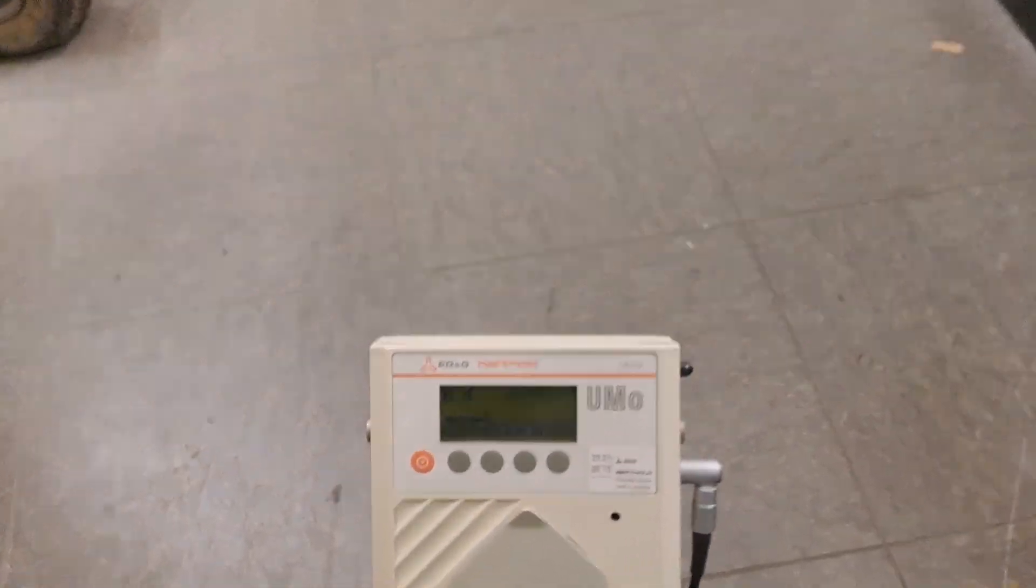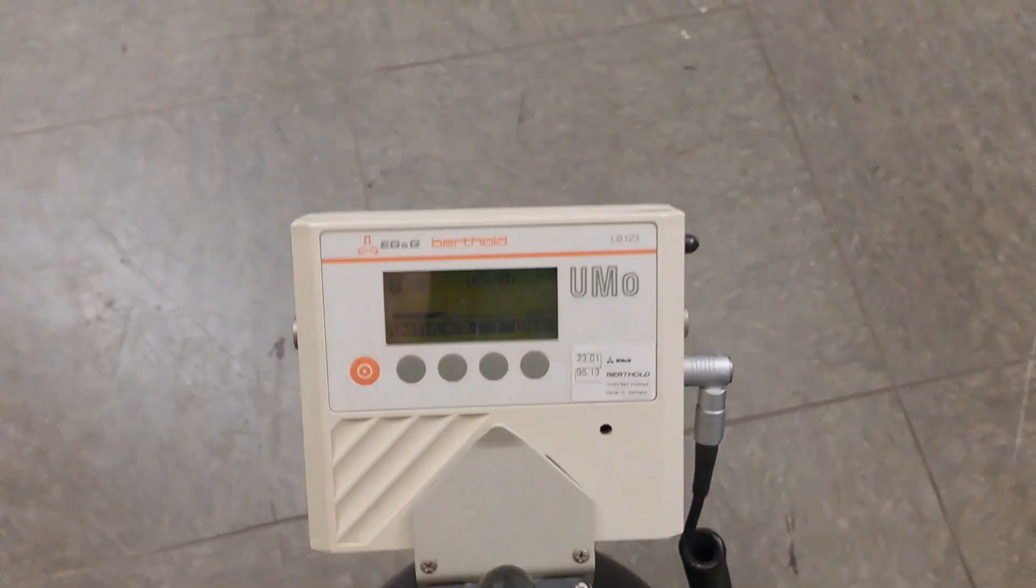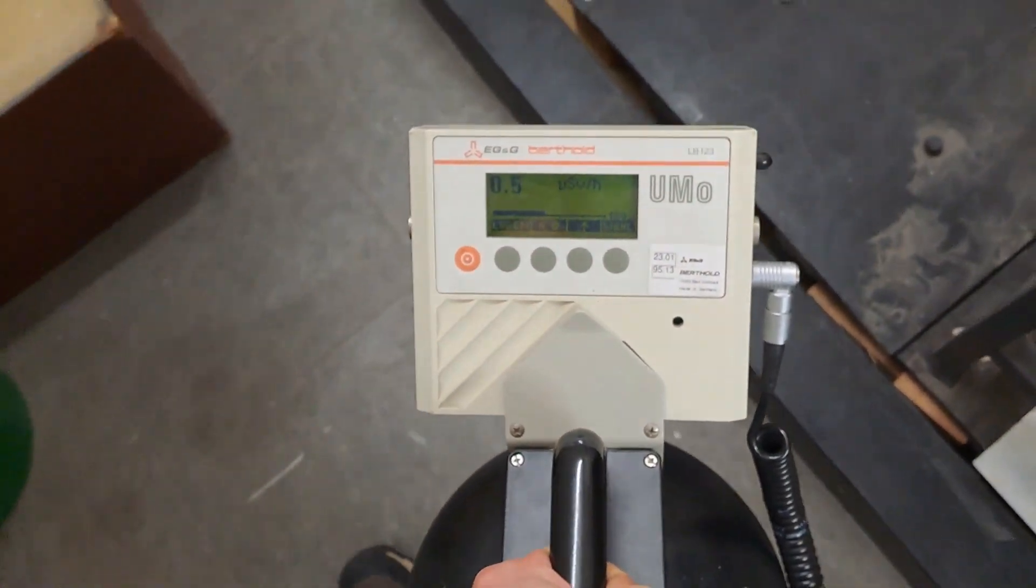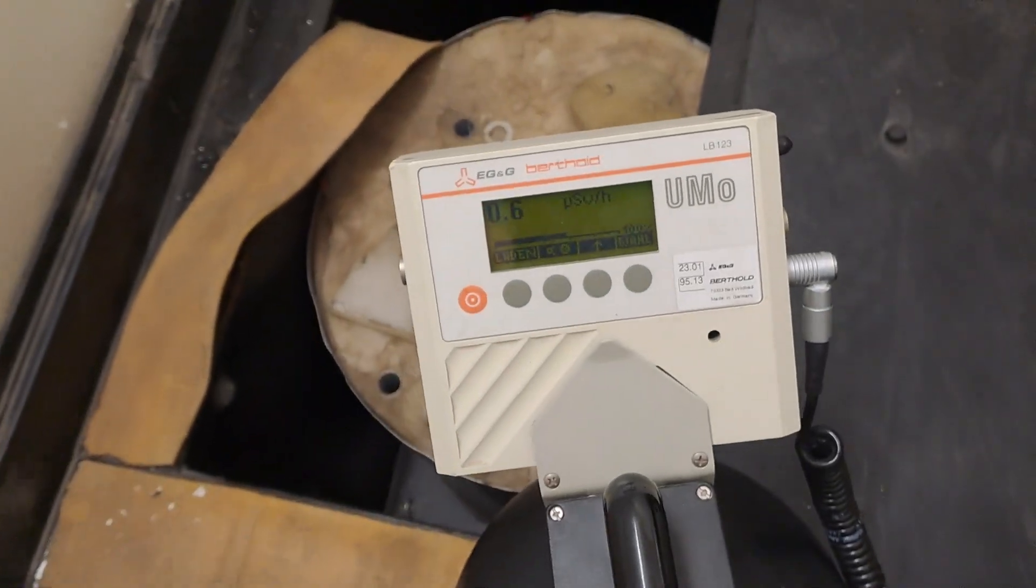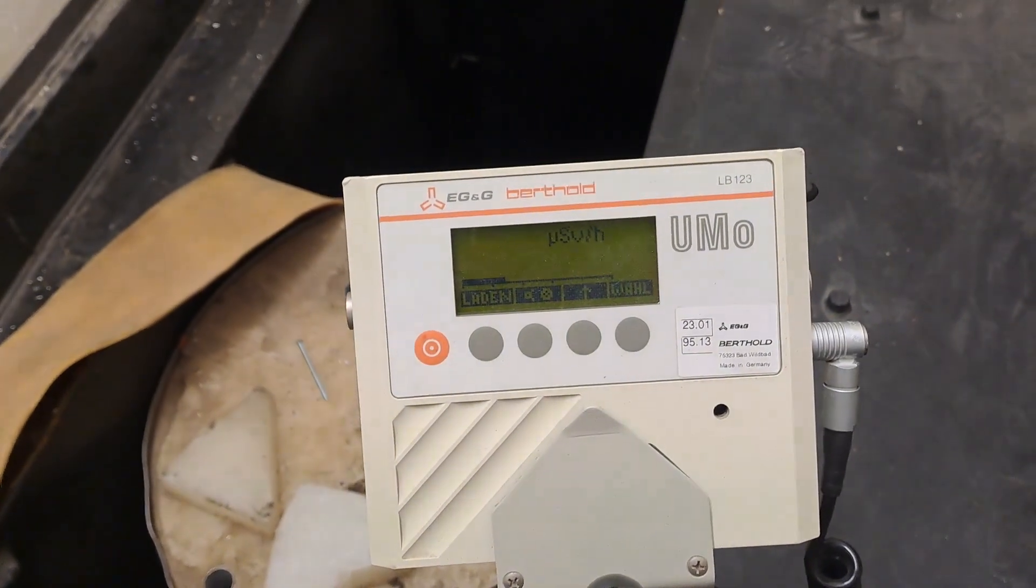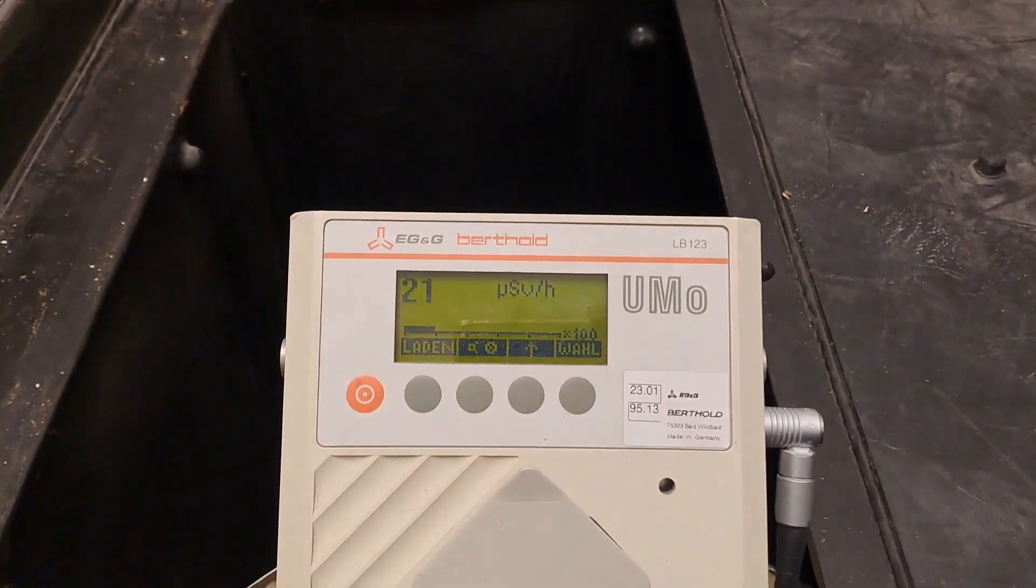So what about the neutron dose from our neutron source? Already at the doorframe, you can measure a neutron dose rate of 0.04 microsieverts an hour. Background is zero for neutrons. The average background neutron flux is 1 neutron. Where we briefly stay during irradiation, there is about 3 microsieverts an hour. And directly above the hole, there are 22 microsieverts an hour.